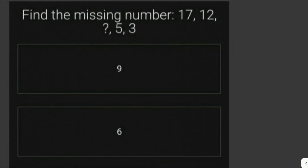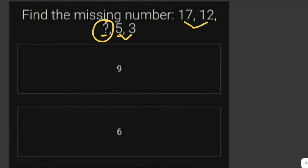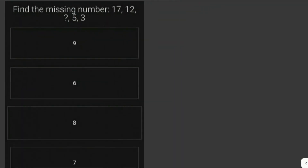Find the missing number in this series: 17, 12, ?, 5, 3. Notice the sequence is decreasing. If we subtract consecutive numbers, the pattern doesn't have a common difference — it appears the pattern decreases by subtracting consecutive odd numbers from the previous number in the sequence.